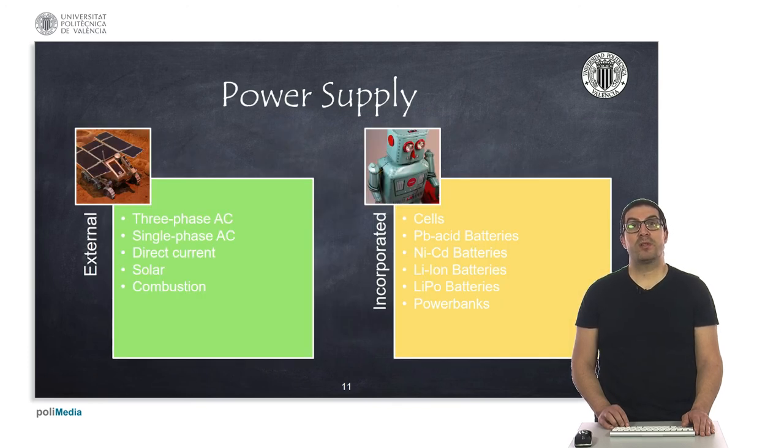The power supply of a robot can be external or internal, that is, the robot has the power supply incorporated in the latter case. Depending on the energy consumption needs, a robot with external power supply can be powered with single-phase, three-phase AC current, or direct current, solar, combustion, among other external power supply systems.